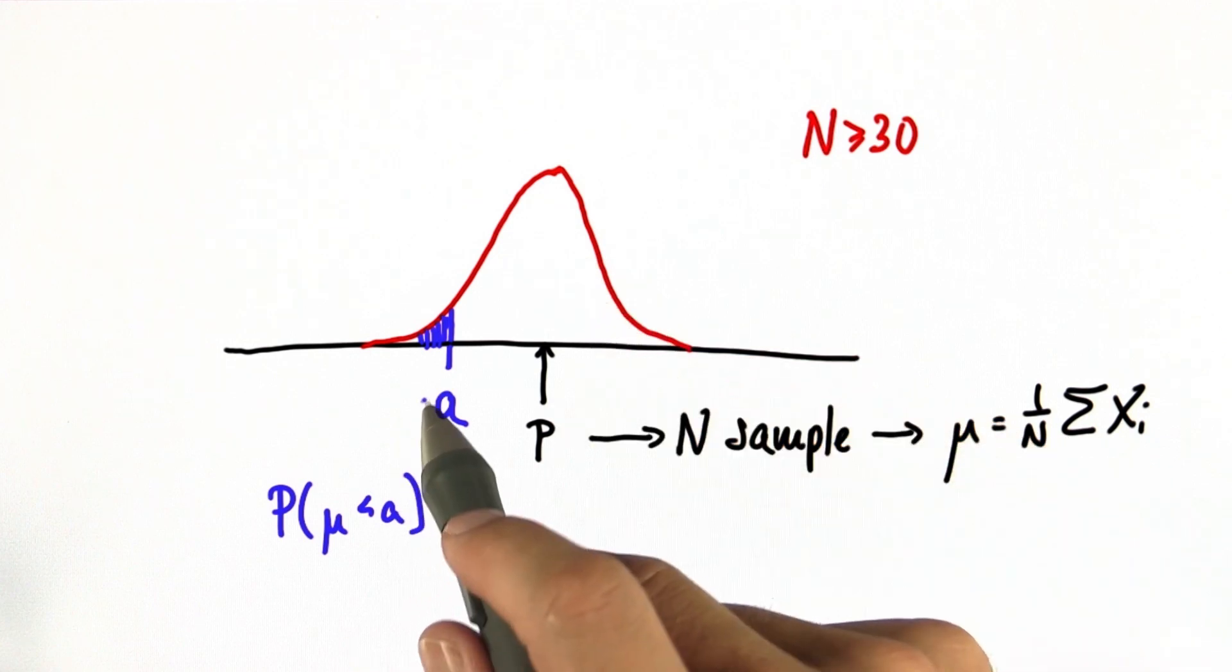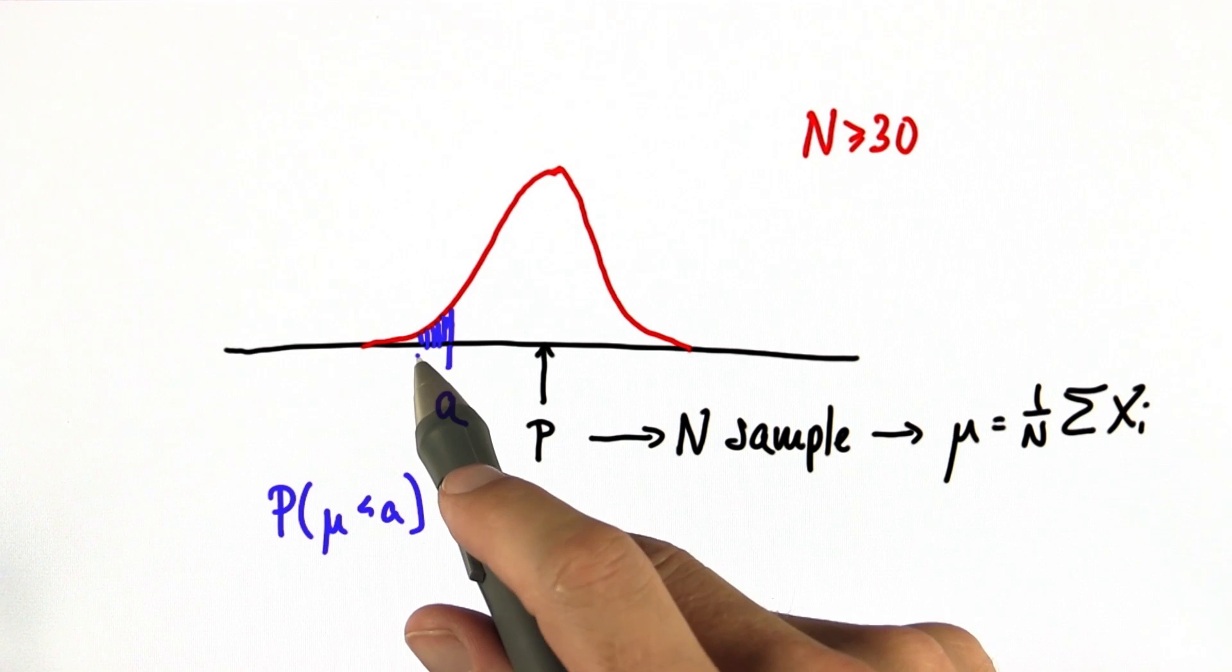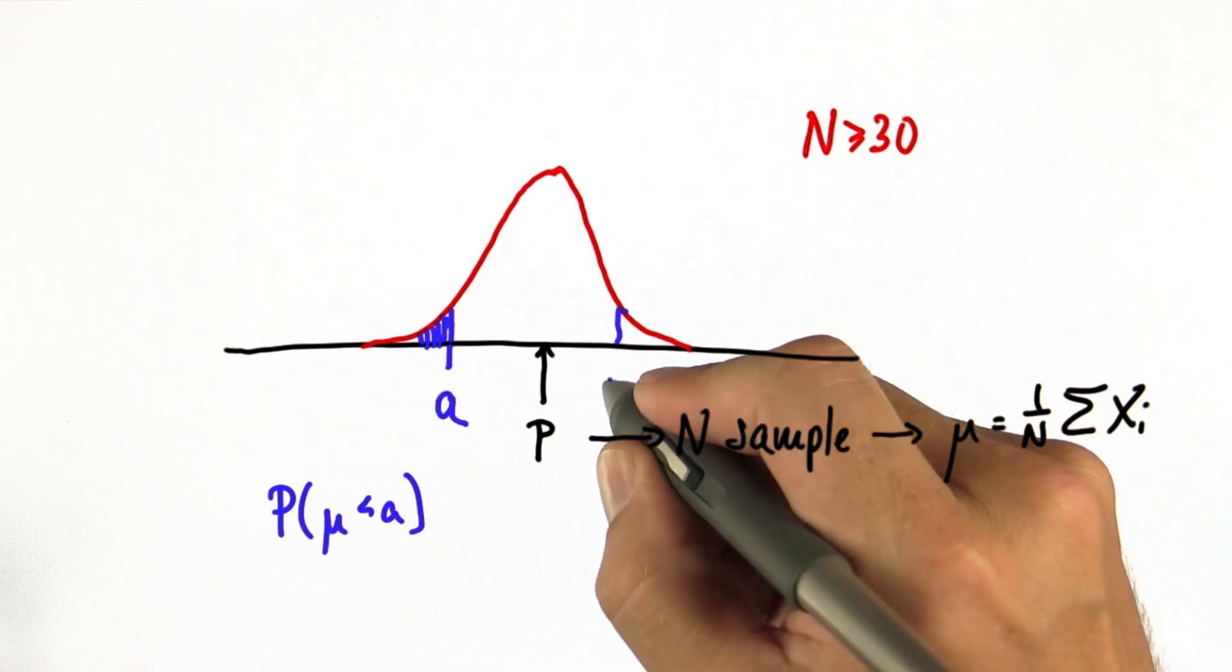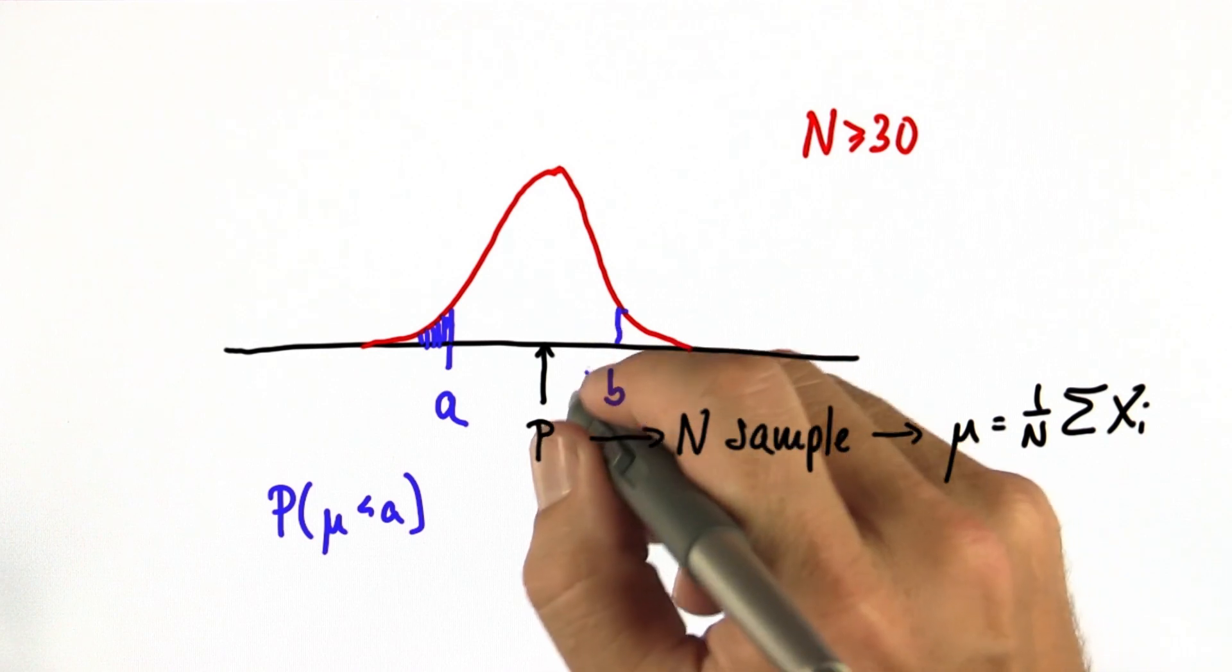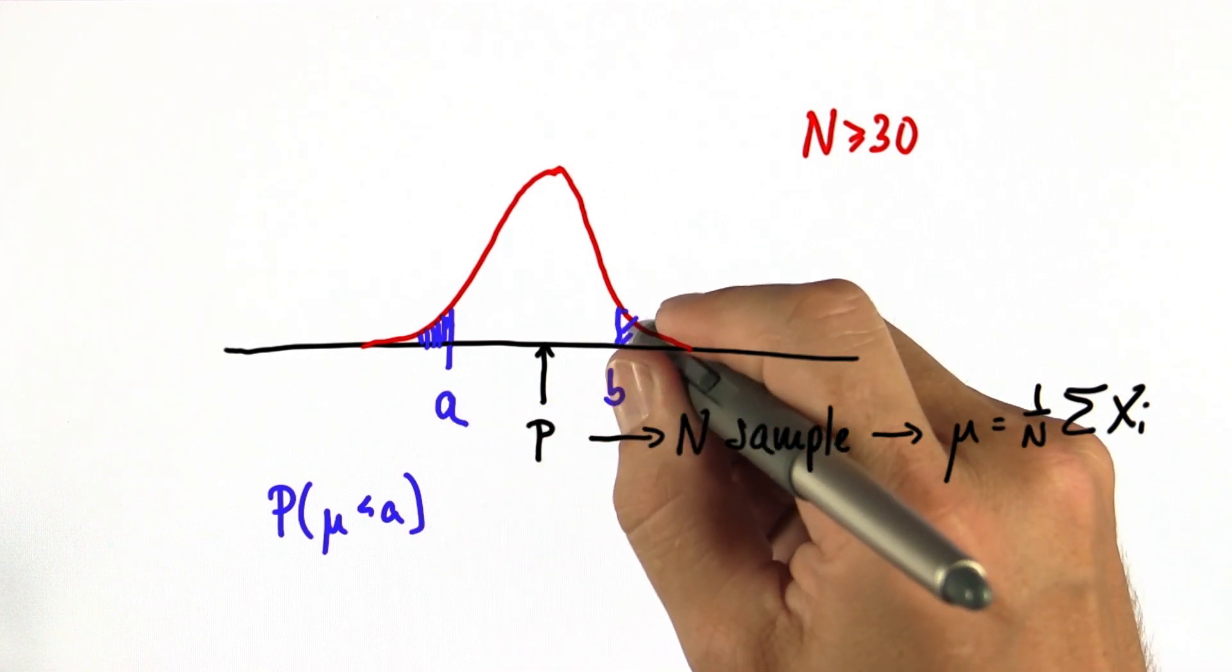So for any value a, we can compute the probability that μ becomes smaller than a. And by symmetry, for any value b, let's say equally away from p as a is on the left side from p, we can do exactly the same thing.